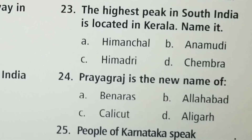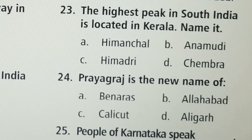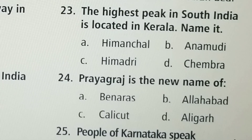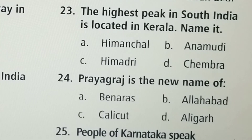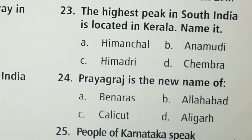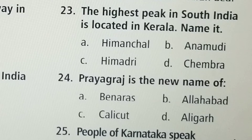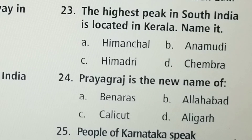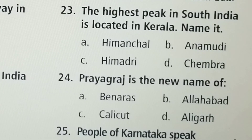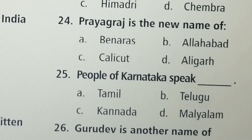Next question: Prayagraj is the new name of — Option A: Benaras, Option B: Allahabad, Option C: Calicut, Option D: Aligarh. Option B, Allahabad, is the correct answer.